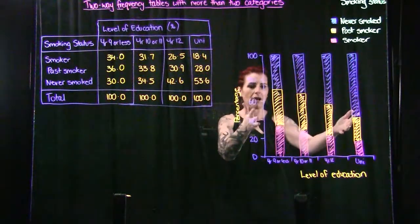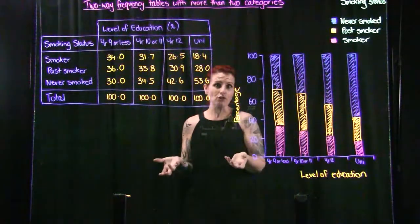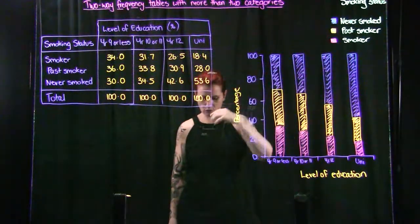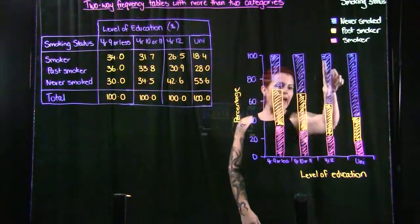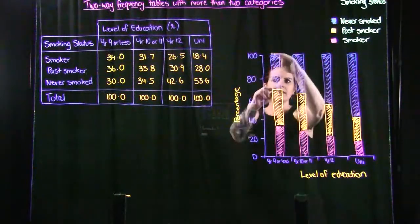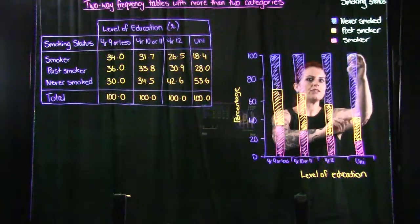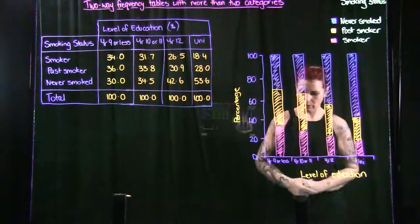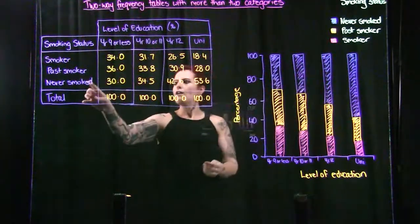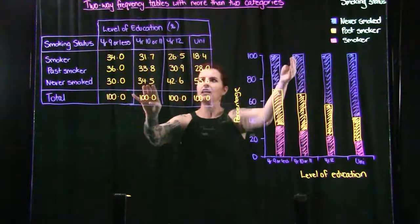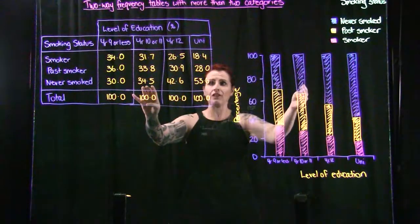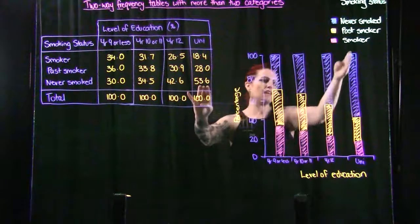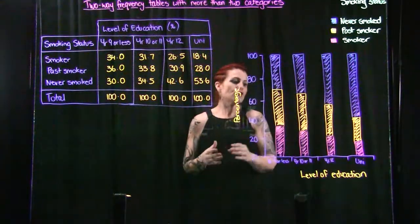Looking at both the table and the segmented bar chart, we can see there is an association between the two. The percentage of adults who have never smoked tends to increase as the level of education increases. It's lowest at Year 9 or less at 30%, then Year 10–11 at 34.5%, Year 12 at 42.6%, and university or tertiary at 53.6% who have never smoked.